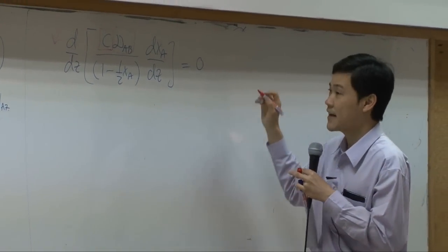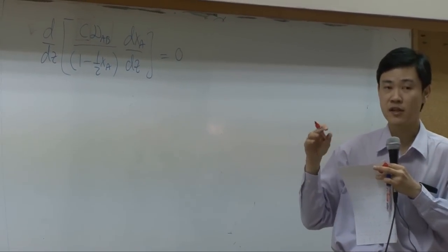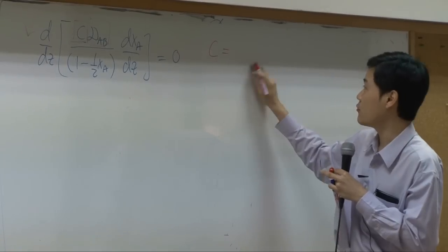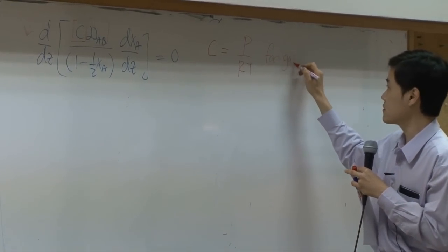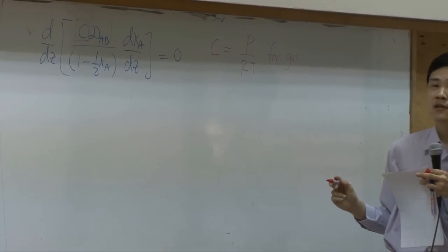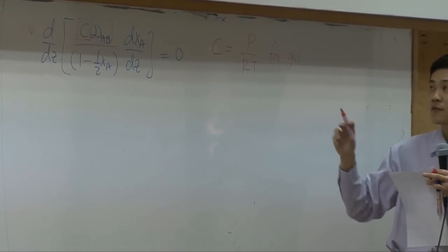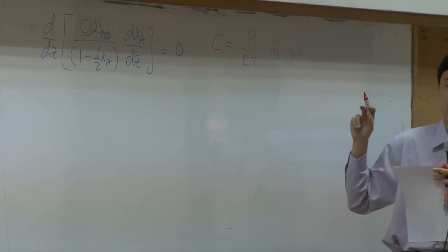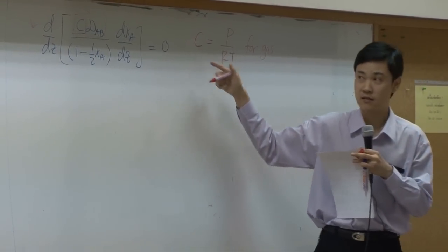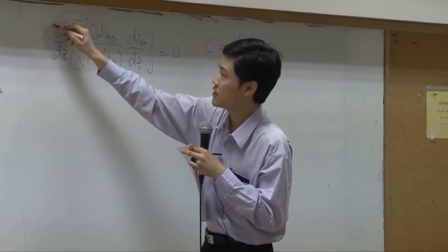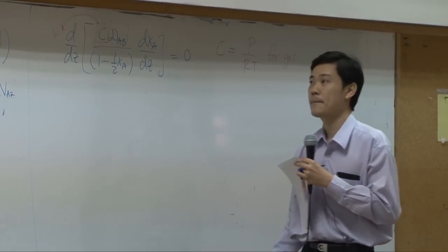So C can be written as pressure over RT for gas or for ideal gas. Right? So as long as you say that temperature does not change much within the film itself and pressure does not change as well, concentration or total concentration can be assumed to be constant. C here can be taken out. Alright?